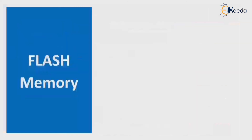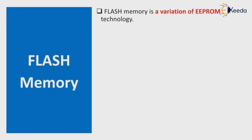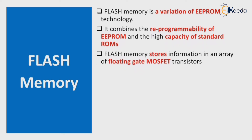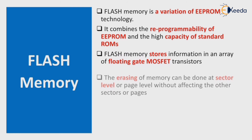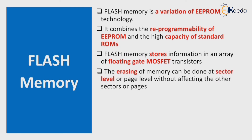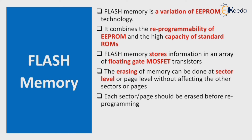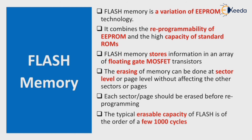The last type is Flash memory, which is a variation of EEPROM technology. It combines the reprogrammability of EEPROM with the high capacity of standard ROM. Flash memory stores information in an array of floating-gate MOSFET transistors. Erasing can be done at the sector or page level without affecting other sectors or pages. Each sector or page must be erased before reprogramming. The typical erasable capacity of flash memory is on the order of a few thousand cycles.